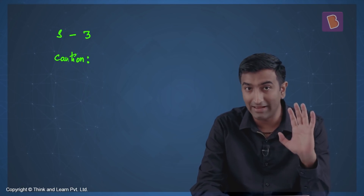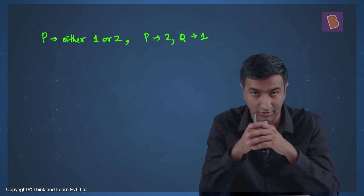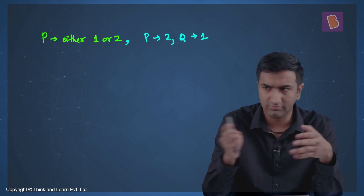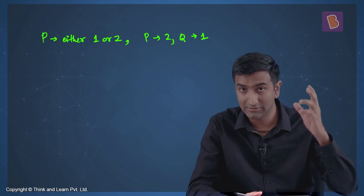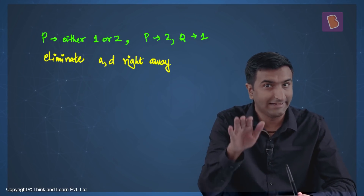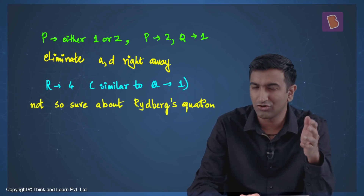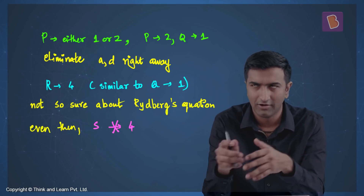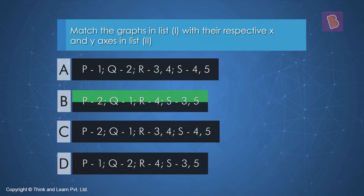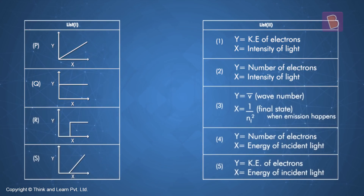Here's the word of caution: P either matches with 1 or 2, and Q is the other way around — that's what the options are telling us. If you figure this out, you can already eliminate options A and D. R matches with 4, similar to Q matching with 1. Even if you're not sure about Rydberg's equation, you know S does not match with 4. So the answer is option B — be smart about questions like this, there's always a trick to do it quickly.